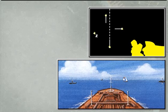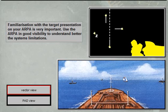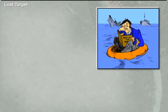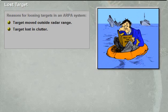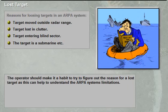All ARPAs should present target information as relative or true, according to IMO standards. The ARPA should clearly warn the operator of lost targets. There are many possible reasons for losing targets in an ARPA system: target moved outside radar range, target lost in clutter, target entering a blind sector, or the target is a submarine. The operator should make it a habit to try to figure out the reason for a lost target, as this can help in understanding the ARPA system's limitations.